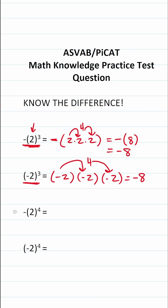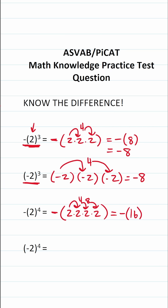Let's move on to this next one. We have negative parentheses two to the fourth power, and that negative sign is outside the parentheses, so we're going to leave it outside. Two to the fourth power is two multiplied by itself four times. Two times two is four, four times two is eight, eight times two is 16, so this is negative times 16, which is negative 16.